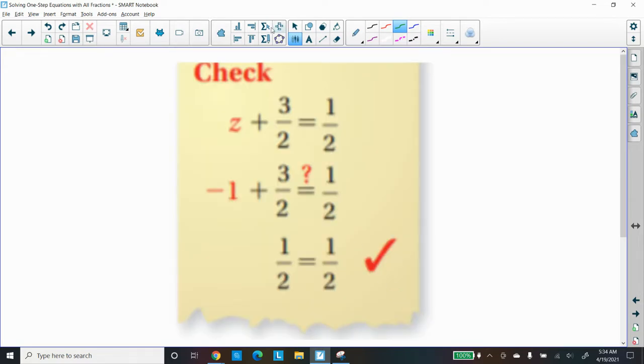We have to check it, so we're going to replace z with negative one, and add three halves to it to see if it's equal to one half. Negative one plus three halves will give us, if we use our calculator, one half, and that equals to one half, so it does check out. Use your calculator to help you out. We're allowed to use our calculators.